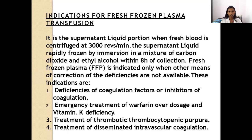Fresh frozen plasma is the supernatant liquid portion when fresh blood is centrifuged at 3000 RPM, rapidly frozen by immersion in a mixture of carbon dioxide and ethyl alcohol within 8 hours of collection. It is indicated only when other means of correction are not available: deficiency of coagulation factors or inhibitors, emergency treatment of warfarin overdosage, vitamin K deficiency, thrombotic thrombocytopenic purpura, and disseminated intravascular coagulation.